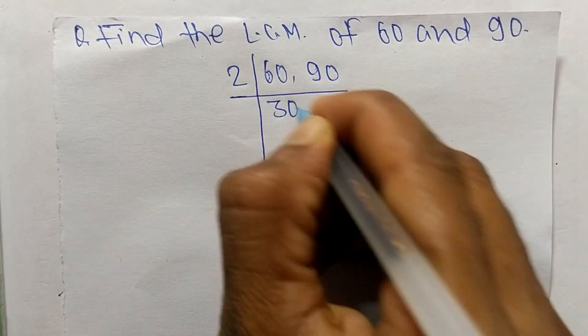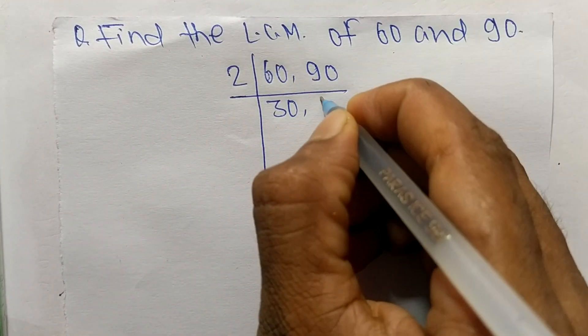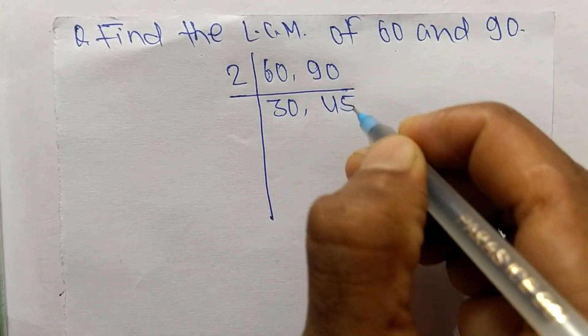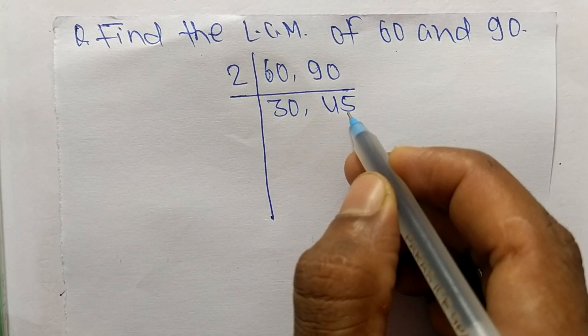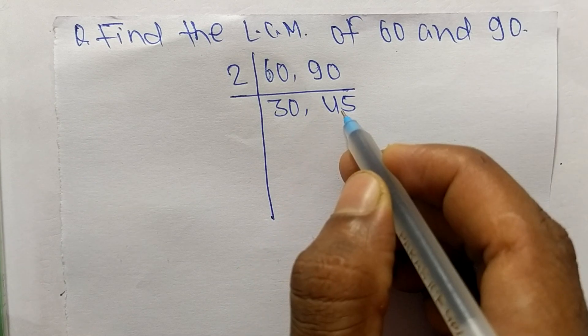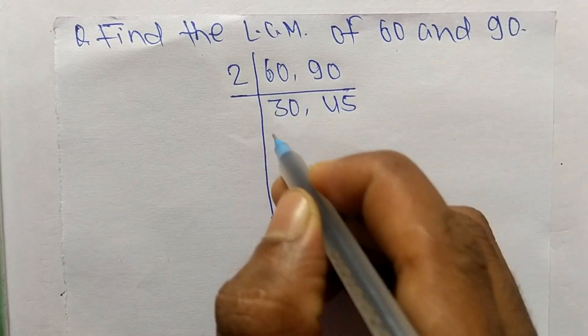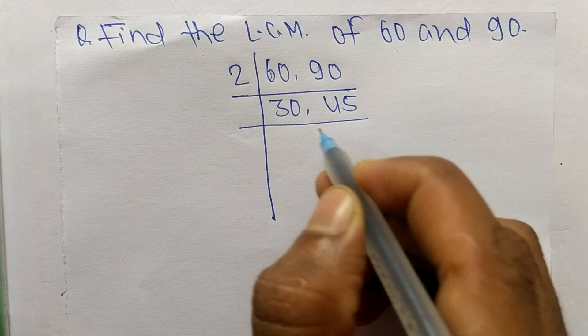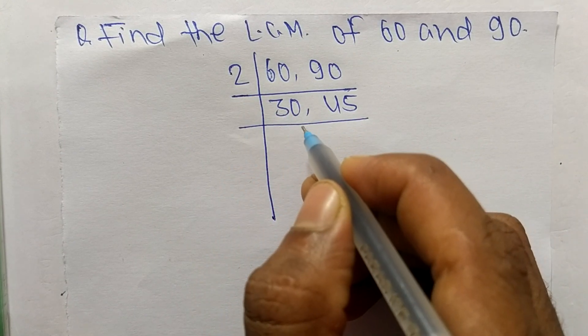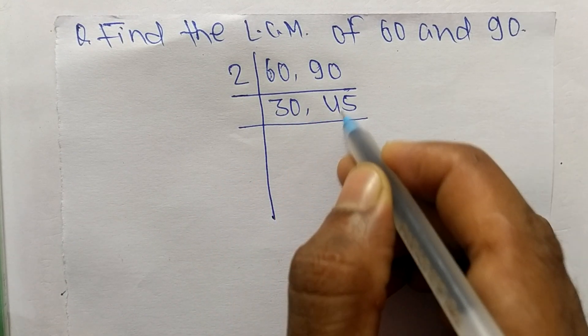2 times 30 means 60, and 2 times 45 means 90. So now we have 30 and 45. These both are not exactly divisible by 2, so we choose the number greater than 2 that can divide 30 and 45.